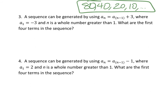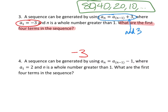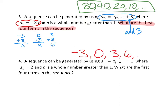Number 3 says a sequence can be generated by using the formula a sub n equal to a sub n minus 1 plus 3, where a sub 1 is negative 3, and n is a whole number greater than 1. What are the first four terms in the sequence? We know the first term is negative 3 because a sub 1 tells us that. Since I see this formula — take the one before it and add 3 — here's the first term: add 3, I get the second term; take the second term, add 3, I get the third; take the third, add 3, I get the fourth. So our sequence is negative 3, 0, 3, 6, continued on.